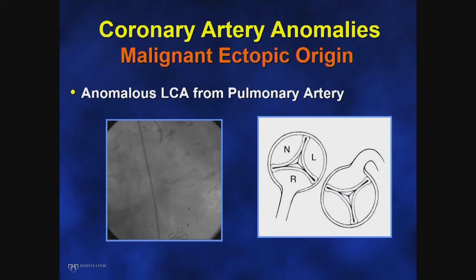The two most malignant ectopic coronary artery anomalies are anomalous left coronary artery from the pulmonary artery and anomalous coronary artery from the opposing coronary sinus. ALCAPA — the anomalous left coronary artery coming from the pulmonary artery — is noted in both children and adults, with the average age at presentation in adults around 42 years. These patients present with heart failure, ventricular arrhythmias, sudden death, or ischemic mitral regurgitation.